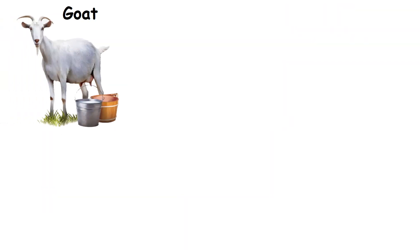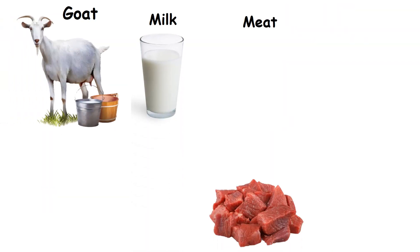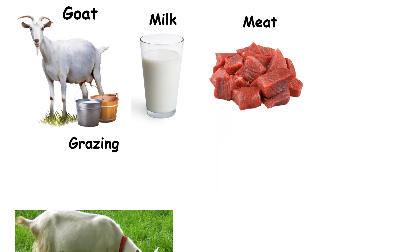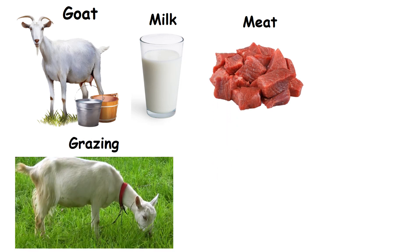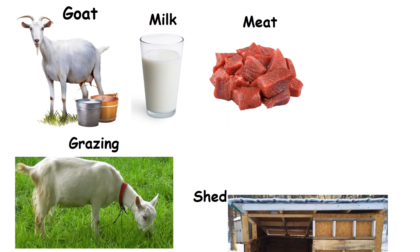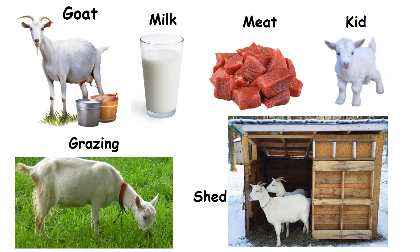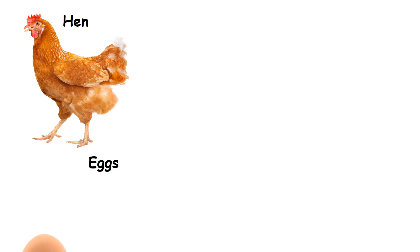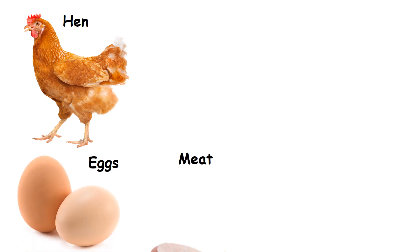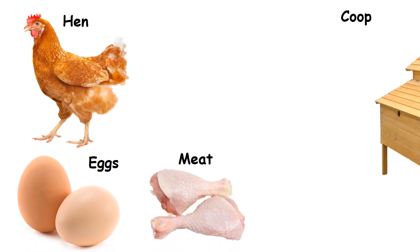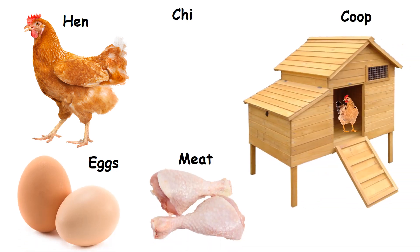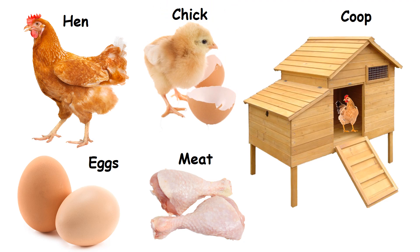Goat: People rear goats for milk and meat. They take them to graze. Its home is a shed and its young one is a kid. Hen: Hens are reared for their eggs and meat. Its home is called a coop and its young one is a chick.